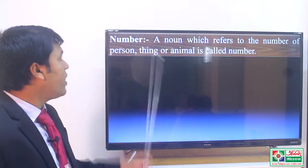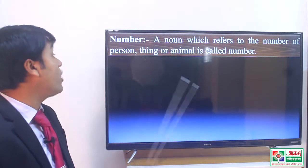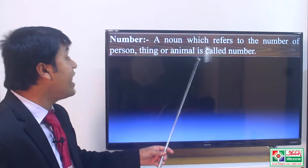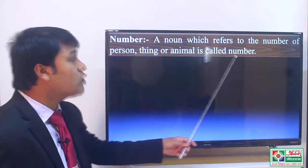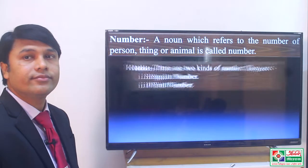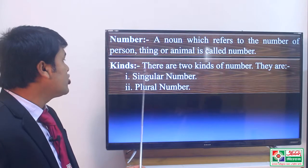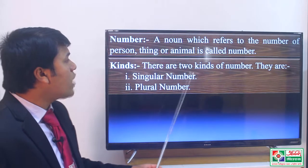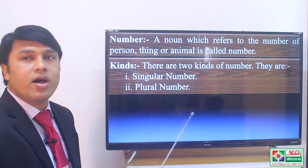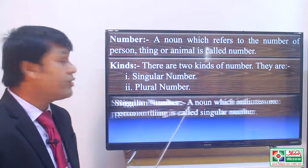Number. A noun which refers to the number of person, thing or animal is called number. There are two kinds of number. They are singular number and plural number.